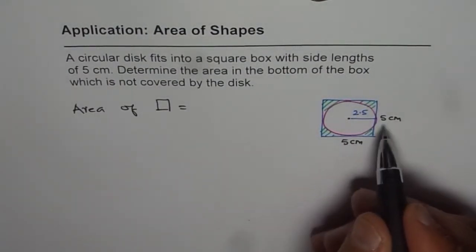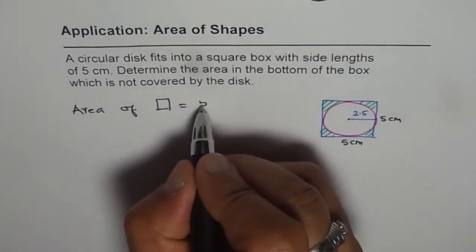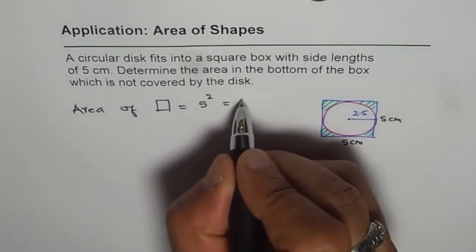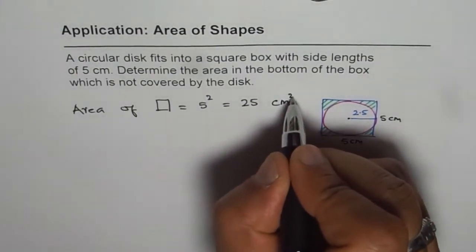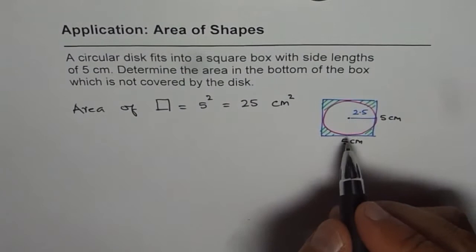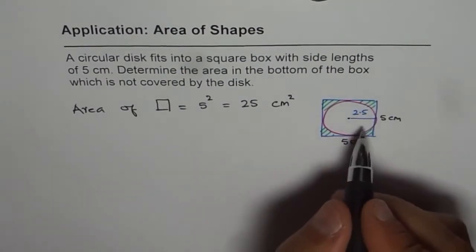Now let's find the area of the square, which should be length times width or side squared. So it is 5 squared, which gives us 25 centimeters squared. To find the area of the circle, we should first find the radius.